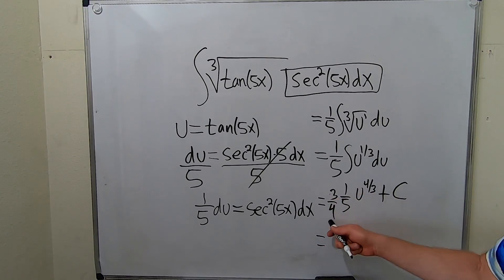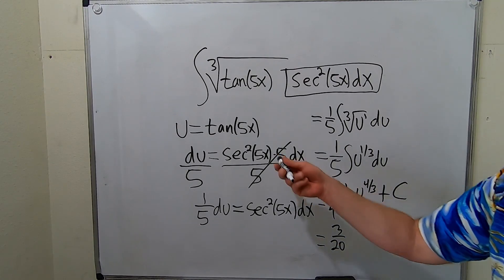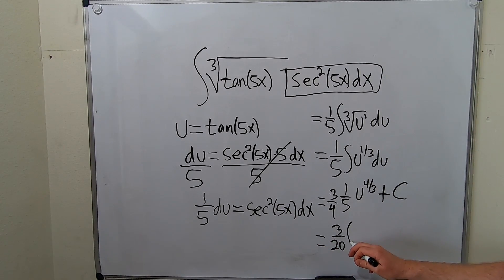So this is 3 over 20. 4 times 5 is 20. And u was over here. So I'm going to write it like this: parentheses tangent of 5x, parentheses 4 thirds plus C.